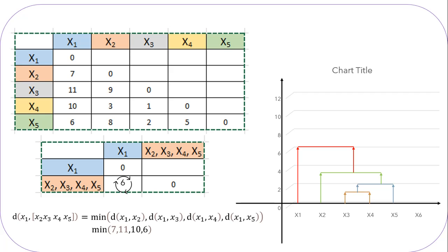This is how your dendrogram will look after solving this problem using agglomerative clustering, where initially we had single data points and at the end we have clusters of different points together. One thing to note is that for finding the distance from a cluster to a data point, we were using the single linkage technique. We also have the complete linkage technique, where we consider the maximum value among all points instead of the minimum.